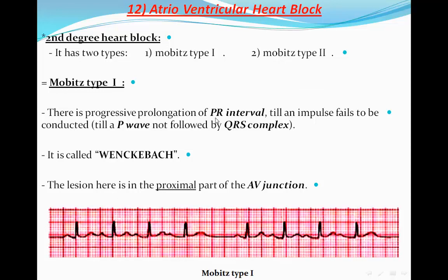In Mobitz type 1, there is progressive prolongation of the PR interval until an impulse fails to be conducted, meaning a P wave will not be followed by a QRS complex. This can be called Wenckebach. The lesion here is in the proximal part of the AV junction. The AV junction is composed proximally of the AV node and distally of the bundle of His, so in Mobitz type 1 the pathology is in the proximal part.